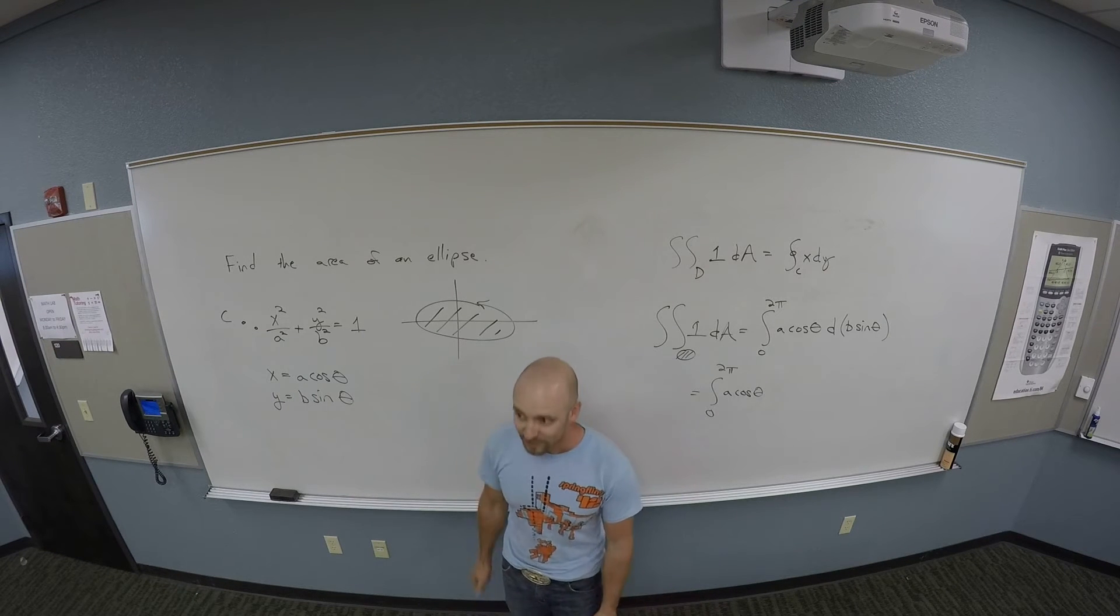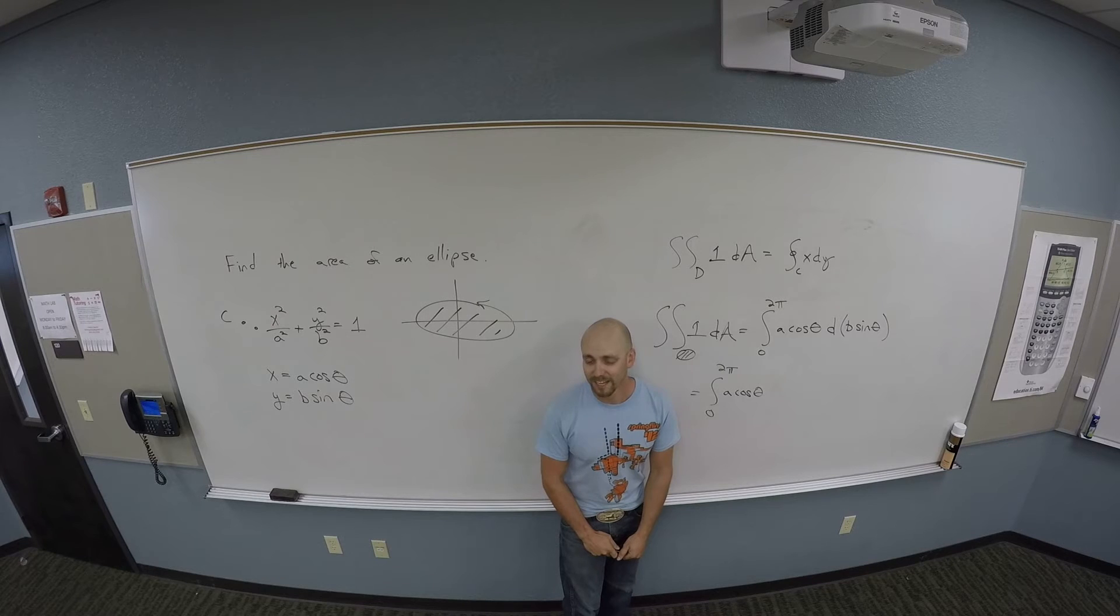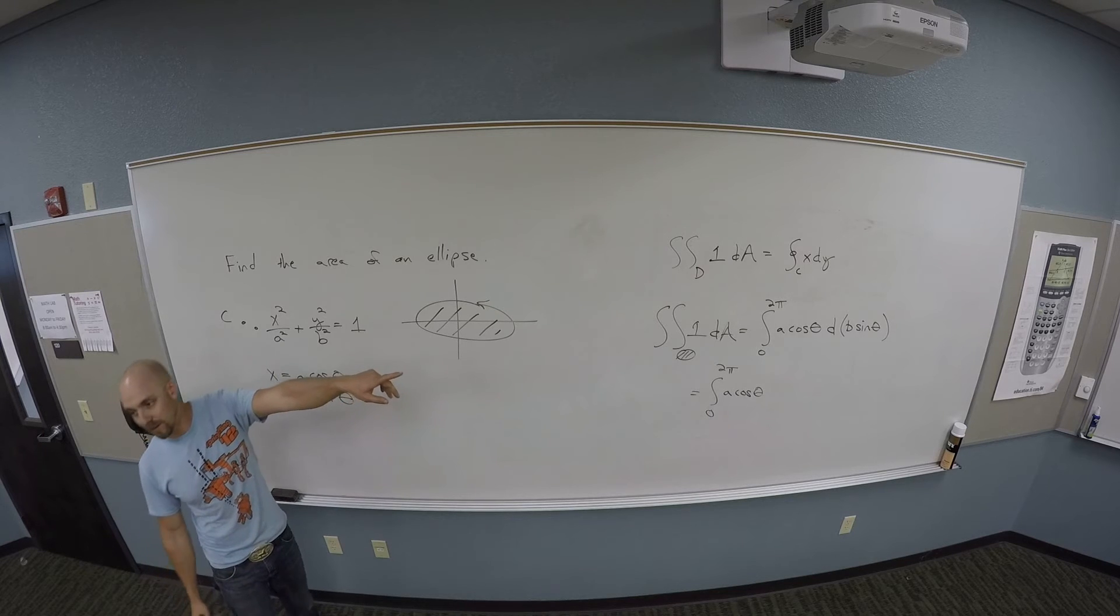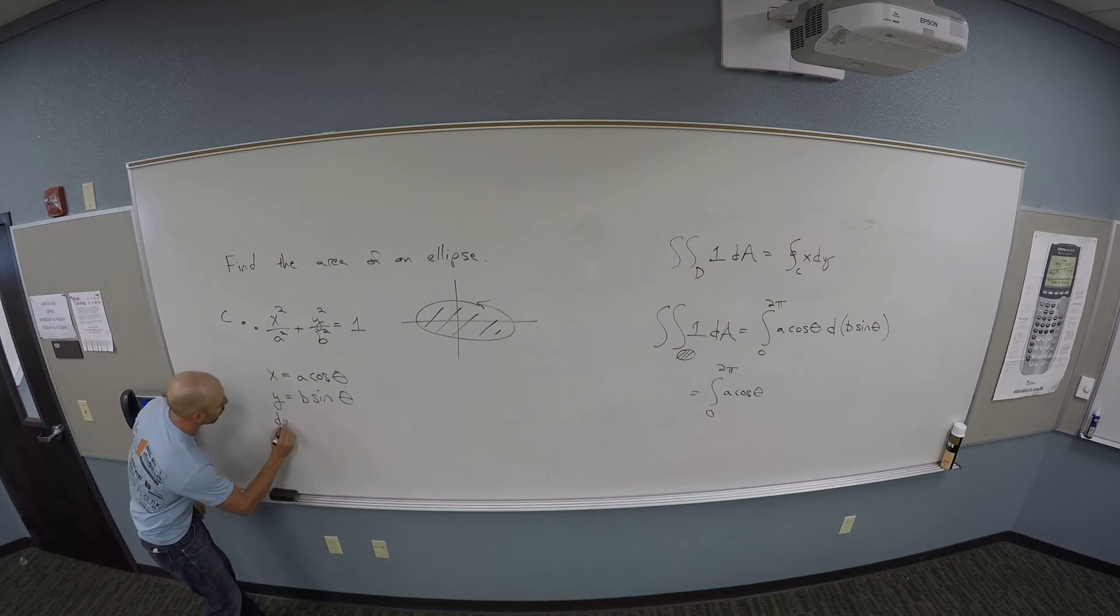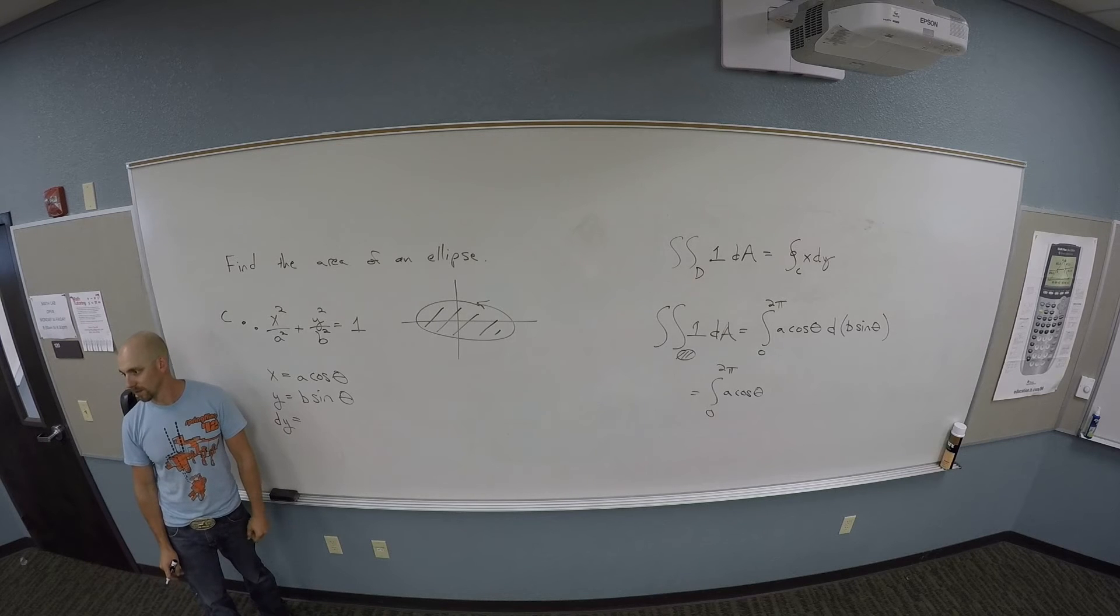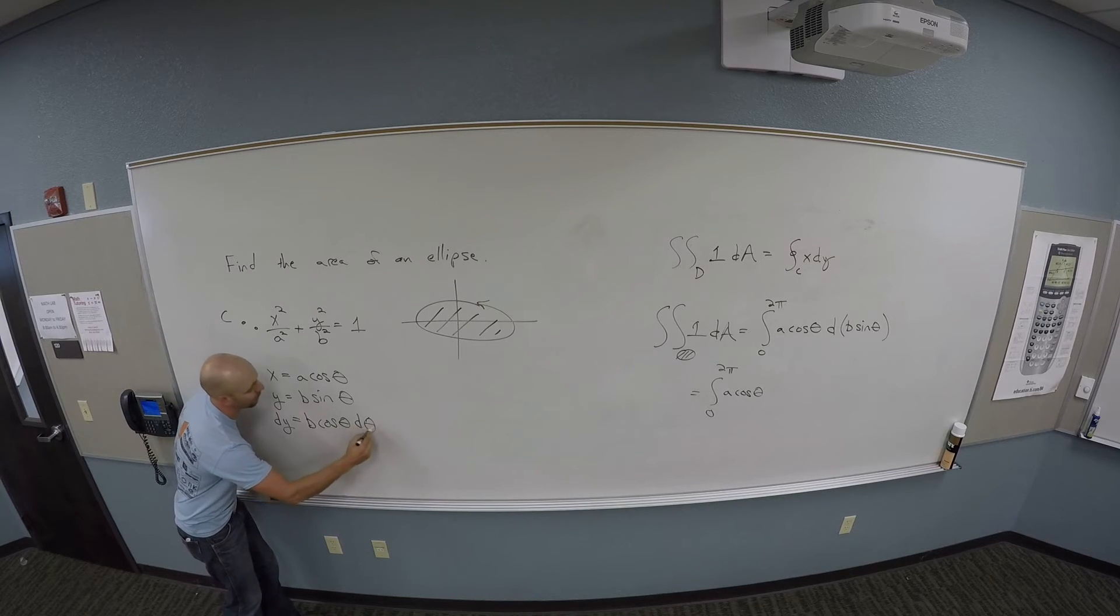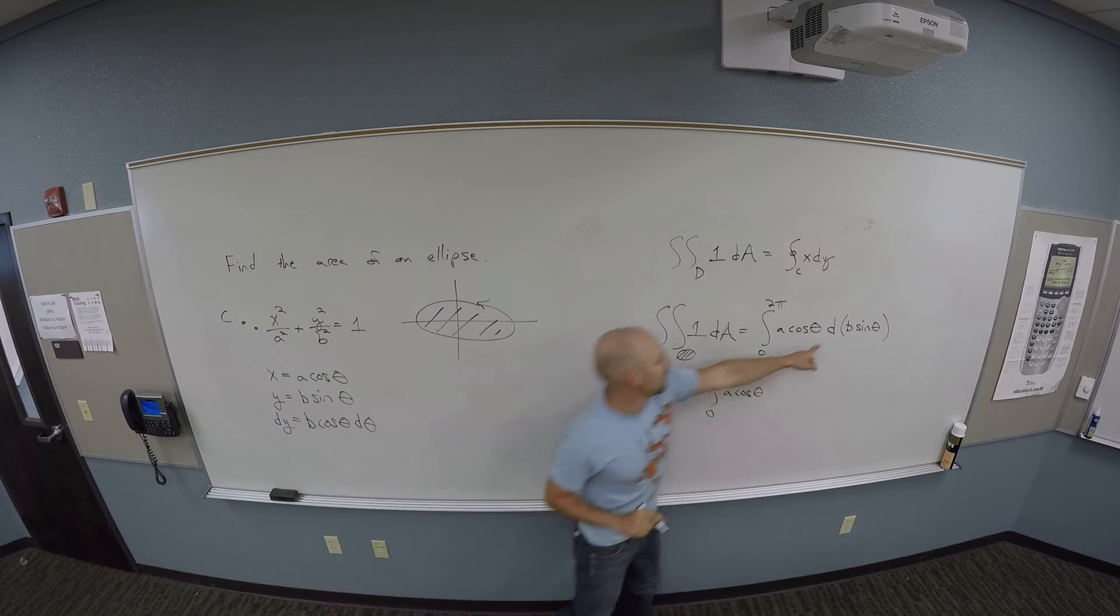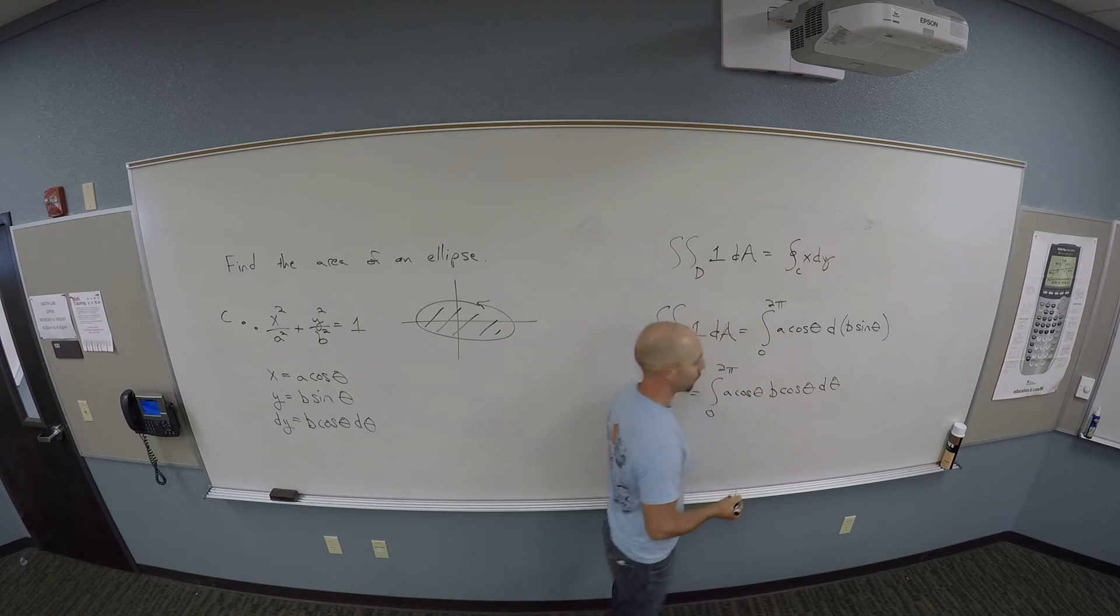So let's finish this thing off. I was doing d of b sine theta. Maybe a better way to do that would be to say I want to find dy. So y was b sine theta, so just like u substitution, what's dy then? dy is b cosine theta d theta, right? You guys put me on that? So when I do d of b sine theta, I should get b cosine theta d theta.